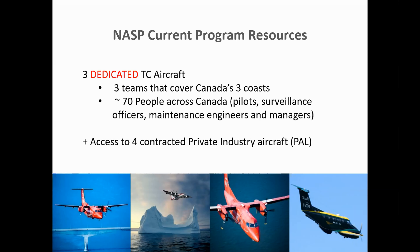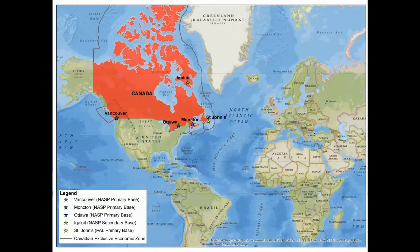These teams are located in three main bases across the country: one in Moncton, New Brunswick, covering the Atlantic, Great Lakes, Newfoundland, and Labrador; one in Vancouver, B.C., covering all of the Pacific and the Western Arctic; and the Dash-7, based in Ottawa, that relocates to Iqaluit during the summer months to cover the whole Arctic.